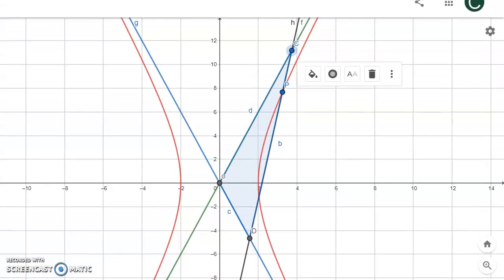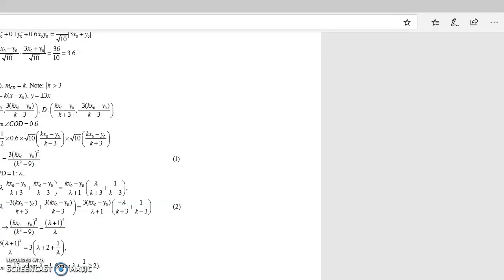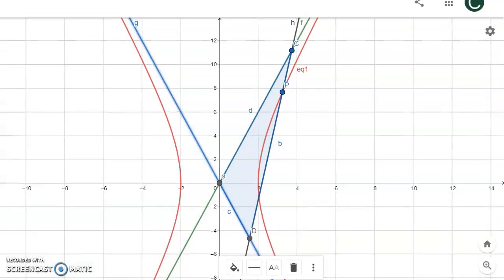Now we're going to find the area of the triangle OCD. So just going back to GeoGebra, the triangle that we're looking for is that shaded blue area. And one thing I can't draw on this is kind of annoying.